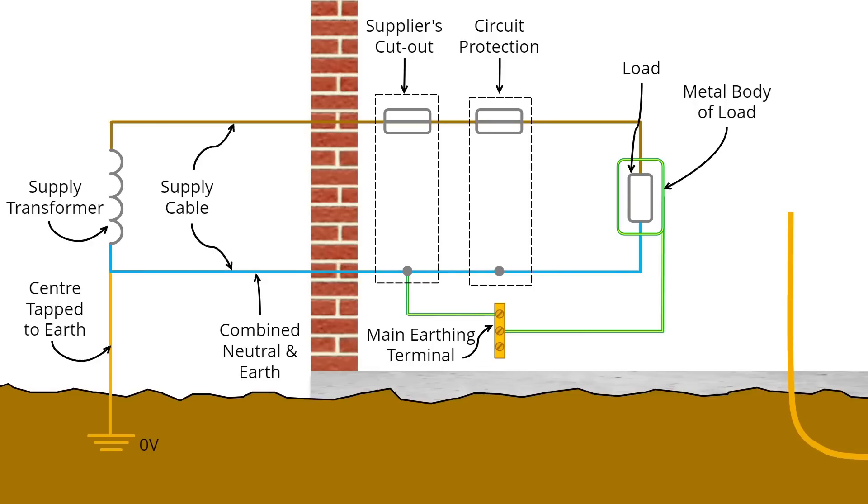If the combined neutral and earth cable supplying a house becomes disconnected outside the building, the current inside the installation will try to find ways back to the transformer supplying the property, and if someone's really unlucky and standing on the actual earth we walk around on or holding onto a metallic pipe buried in the ground, it could flow through them.